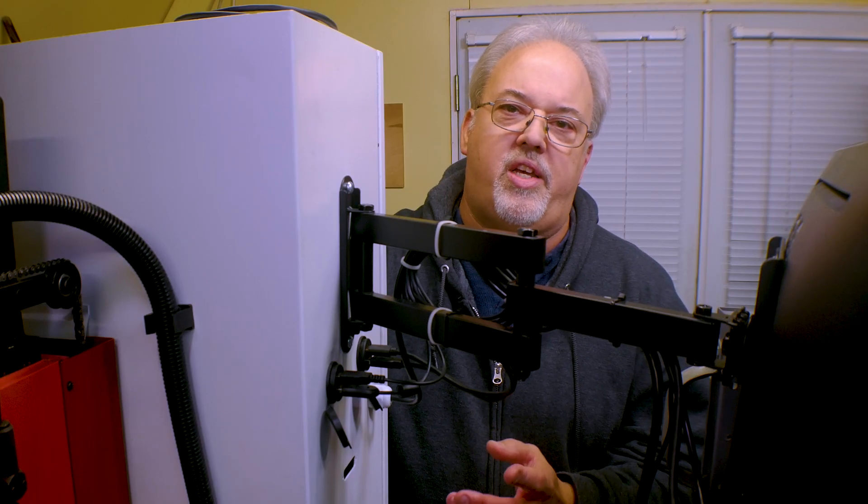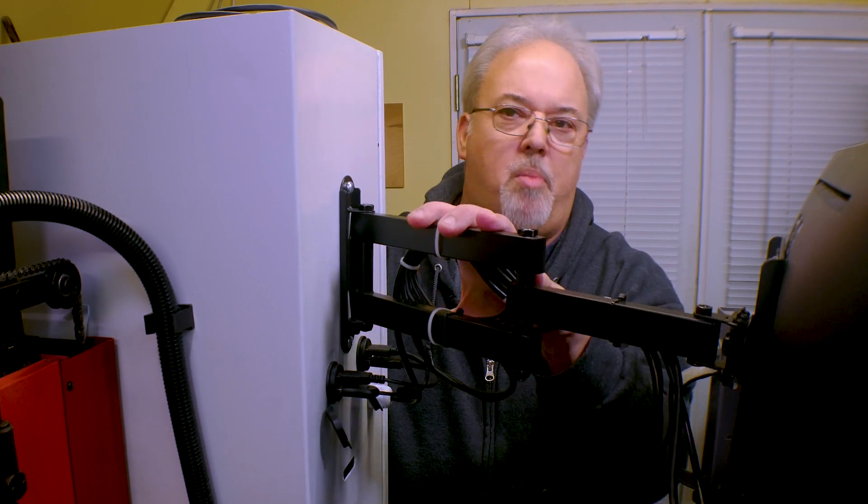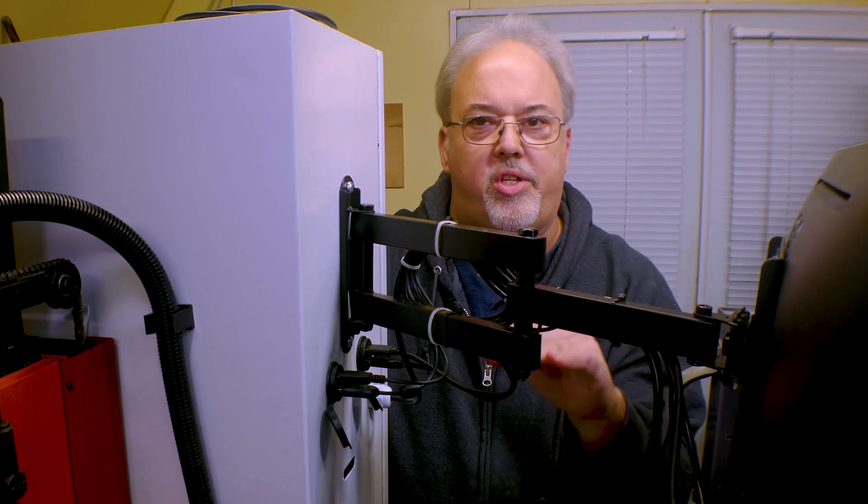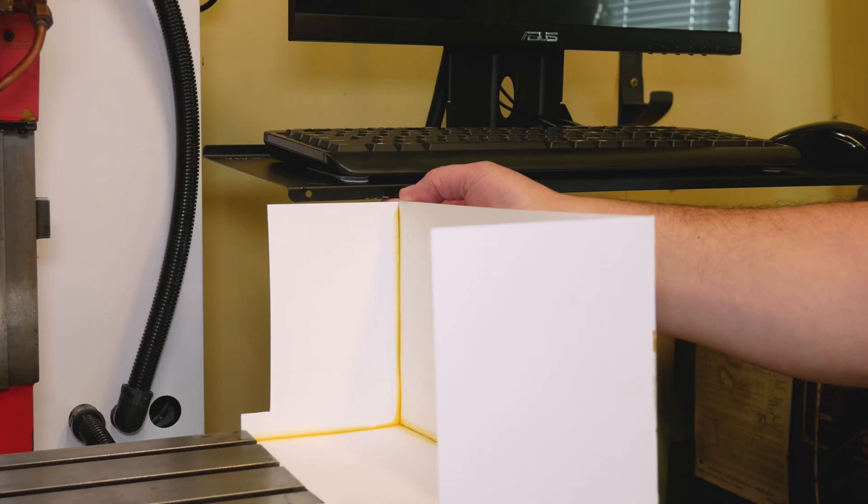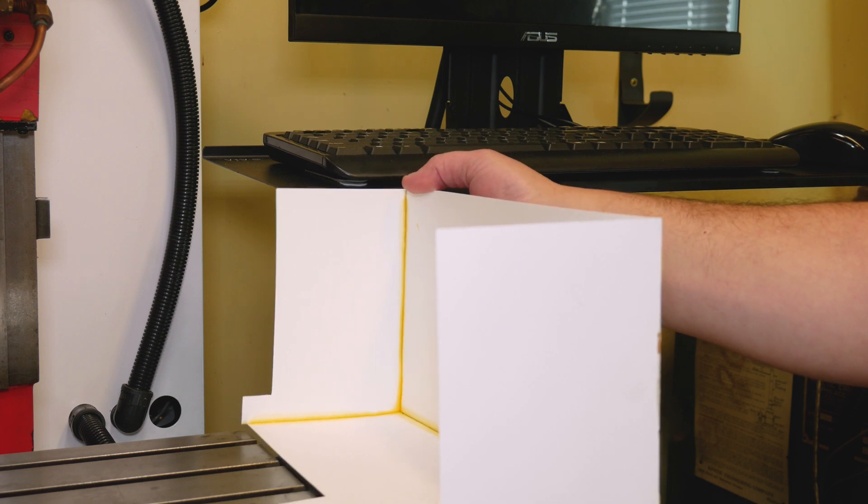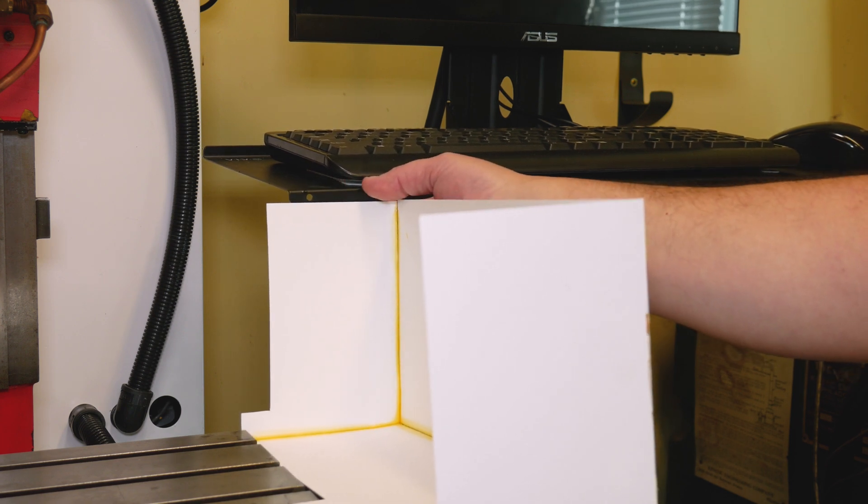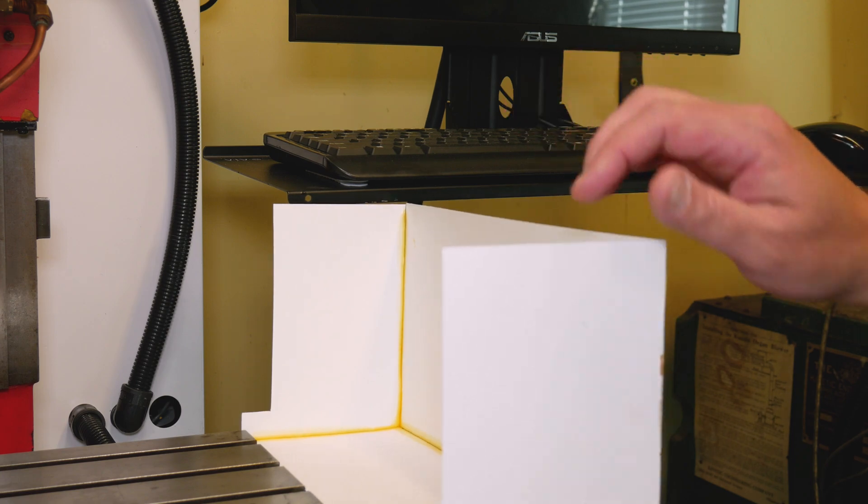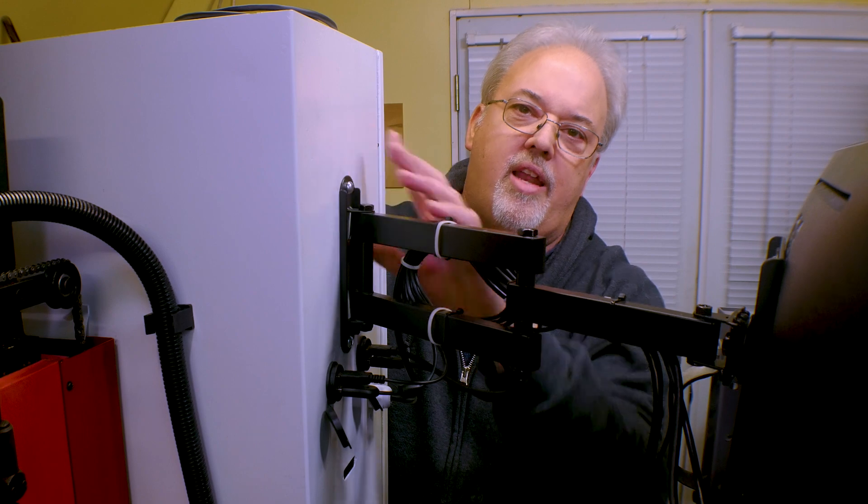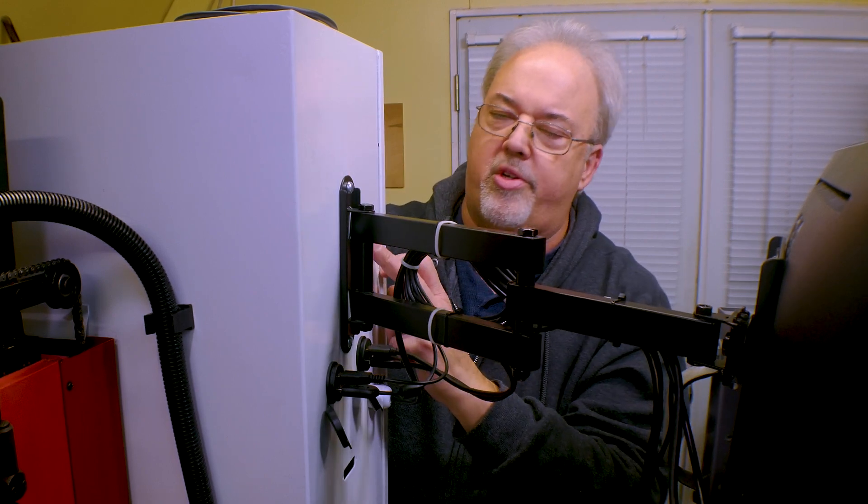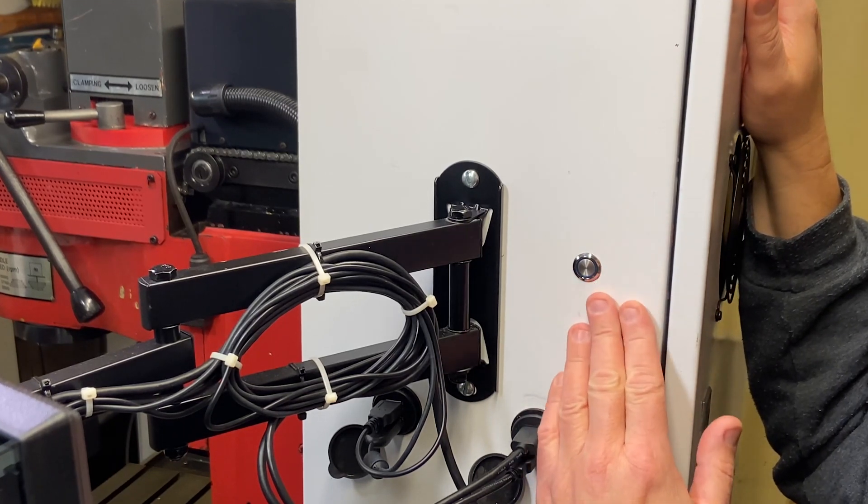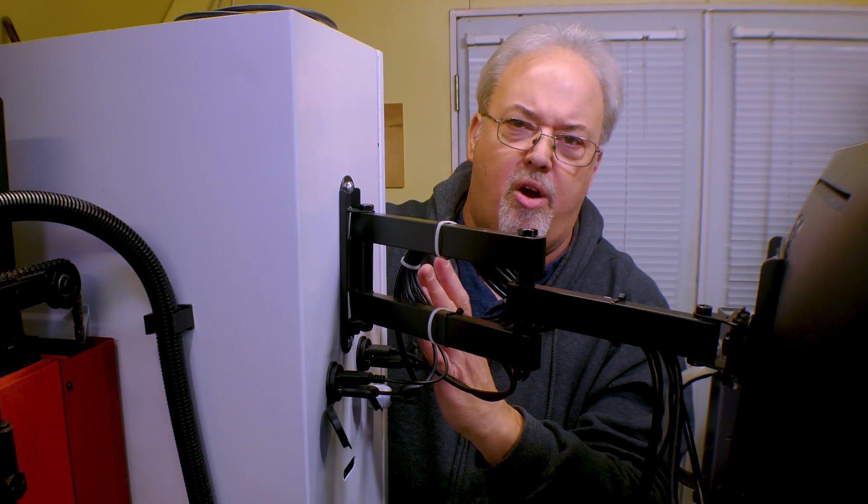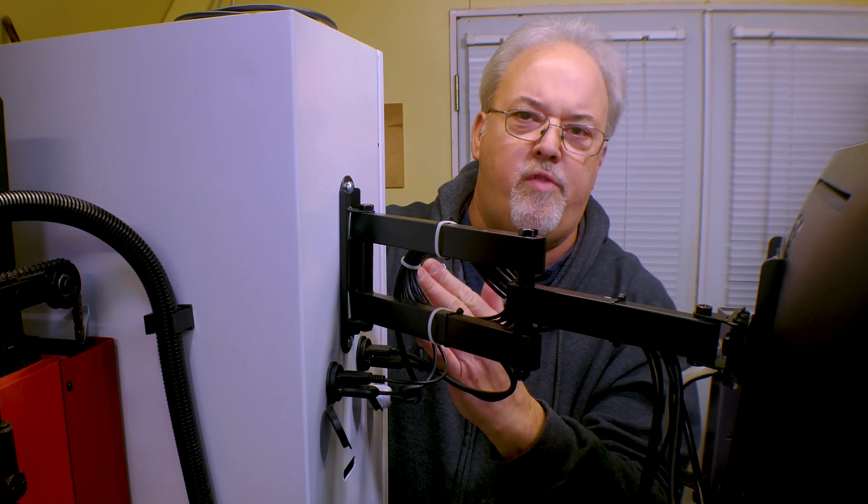I've got a few things I want to take care of on the side of the CNC machine here, the first of which is this monitor arm. The whole arm sits just a little bit too low, which is something we discovered when we made the mock-up of the chip guard assembly. There was some interference between the keyboard tray and the top of the chip guard. So if we ever want that chip guard to fit properly, we're going to need to move this up.